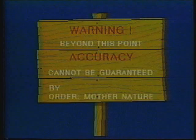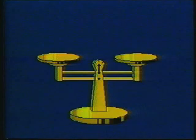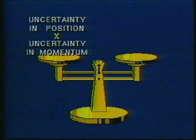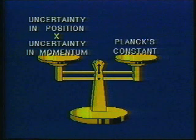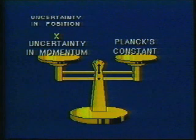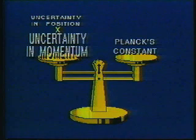Heisenberg's uncertainty principle explains why the position and momentum of an electron in motion cannot be measured simultaneously with great precision. In other words, there is a natural limit to the accuracy of certain kinds of measurements. Mathematically, the uncertainty principle is this: the uncertainty in position times the uncertainty in momentum equals Planck's constant. As the uncertainty about one shrinks, the uncertainty about the other has to grow to keep the equation balanced.